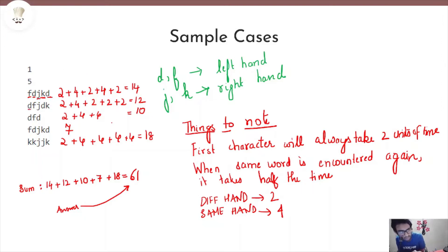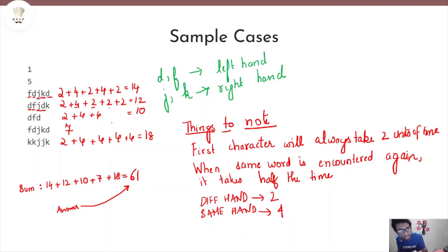For the second word, the starting character always takes 2 units of time. The next character F is written with the left hand, and the previous character D was also left hand — plus 4. Then J is written with the right hand while F was left hand — plus 2. Then D is left hand while J was right hand — plus 2. Finally K is right hand while D was left hand — plus 2. Total: 2 + 4 + 2 + 2 + 2 = 12 units of time.